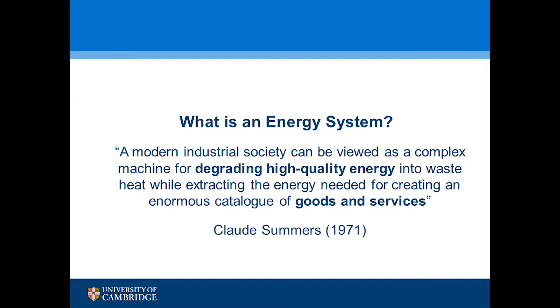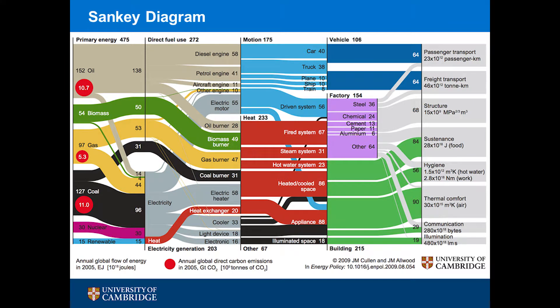What is an energy system? It's a bit more complicated to define, but essentially it's taking some high quality energy form and degrading it to eventually provide some good or service. One way of visually representing an energy system is through a Sankey diagram. Going from left to right, you have some primary energy that's converted through different processes to electricity or heat, that then gets used in a passive system to provide some final service, with funky units like passenger kilometers for transport or joules for food. Important to note is that electricity is not total energy — electricity is only around 20% of final energy consumption.